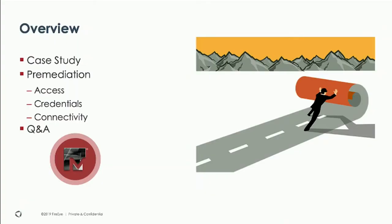A little bit of an overview of what we're going to talk about. I'm going to go through a case study. I do incident response for Mandiant and we are involved in the majority of major breaches. This case study is actually from a real-life attack that happened at a client. We'll walk through exactly what happened and how the attacker was able to gain a foothold. We'll also go through three main components of the exploitation model: access, credentials, and connectivity. After that, we'll have some Q&A.